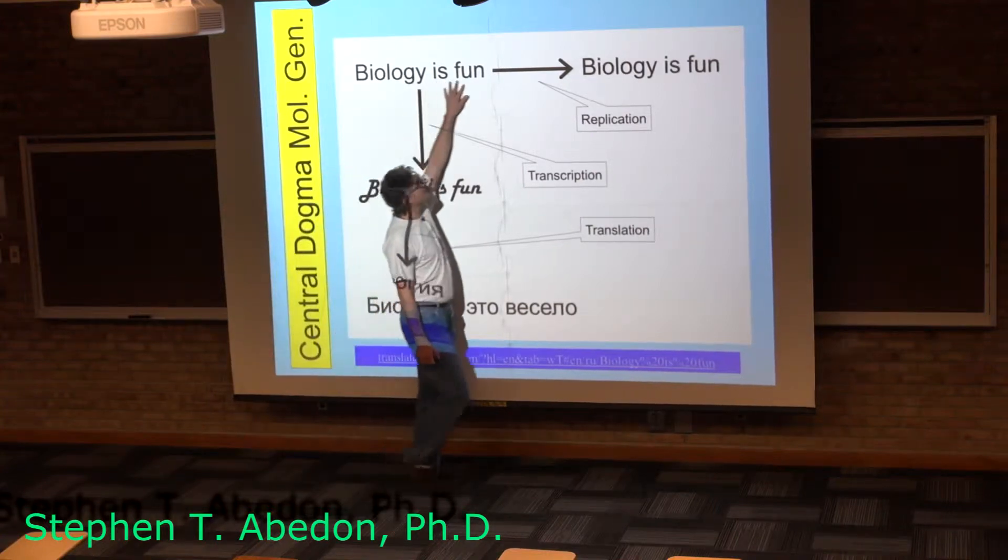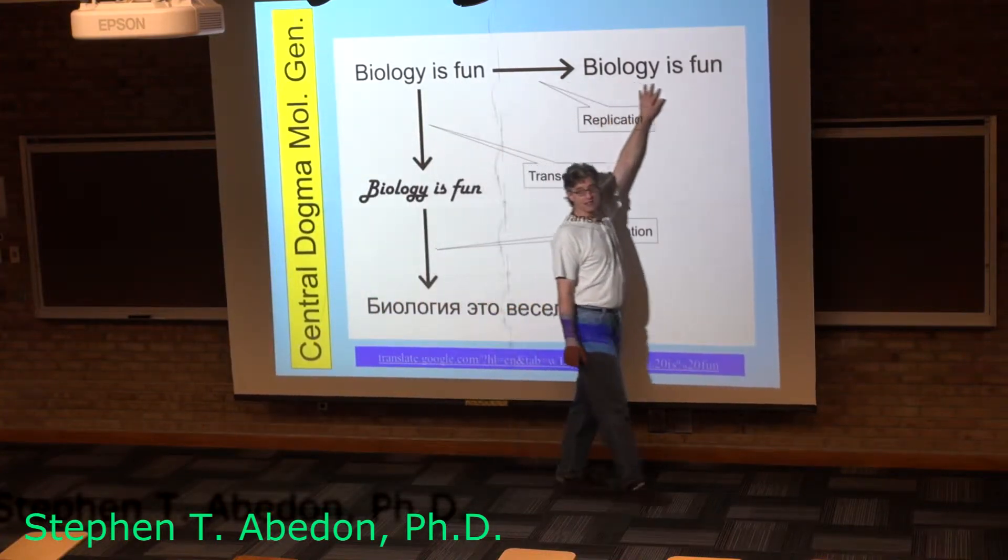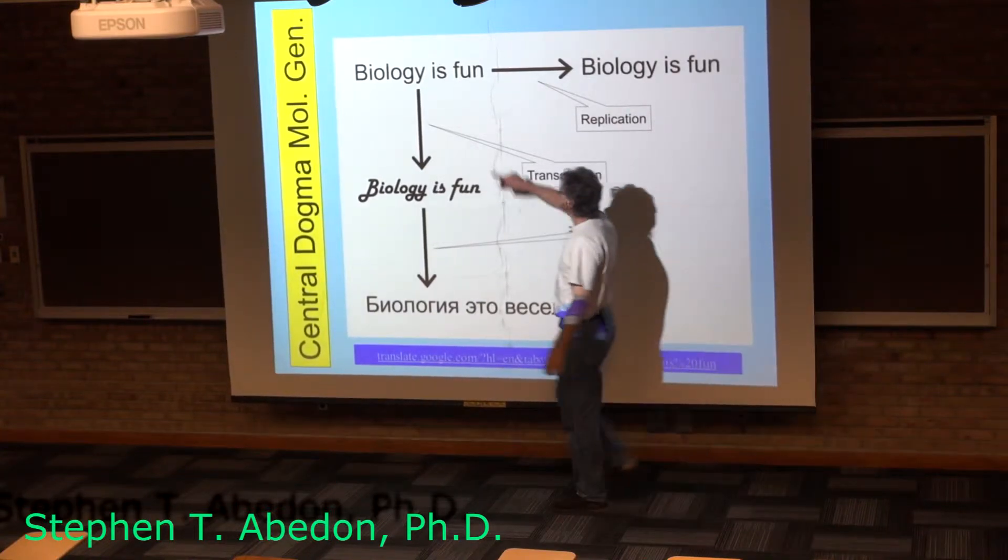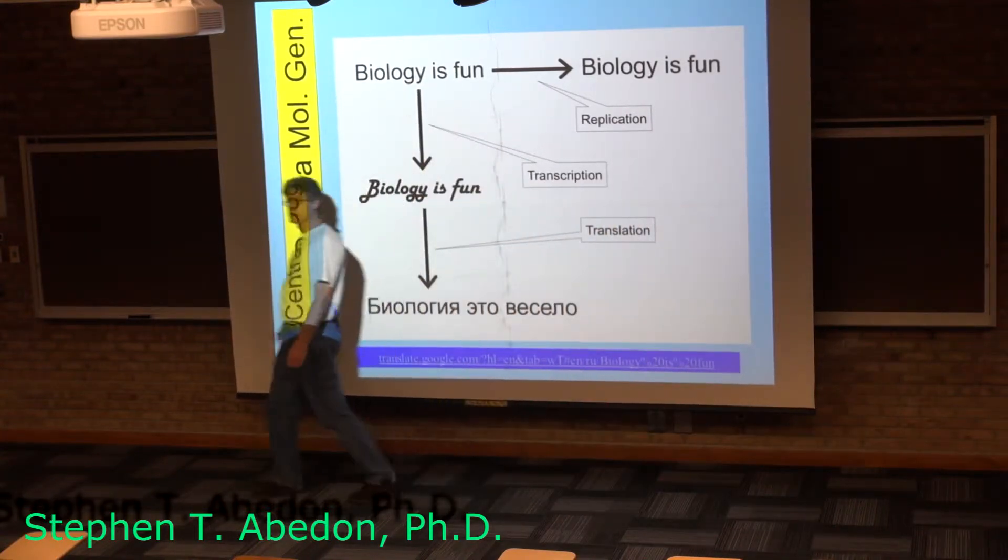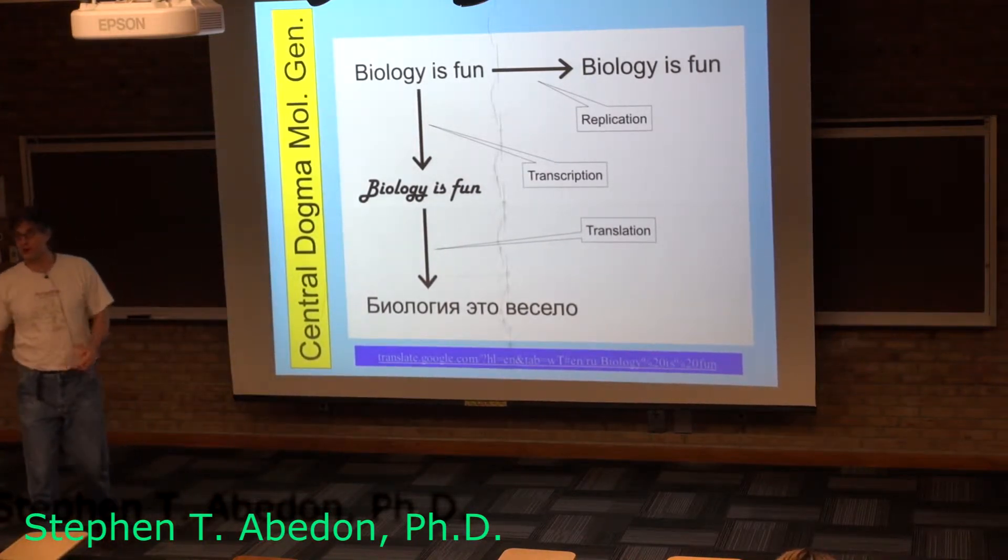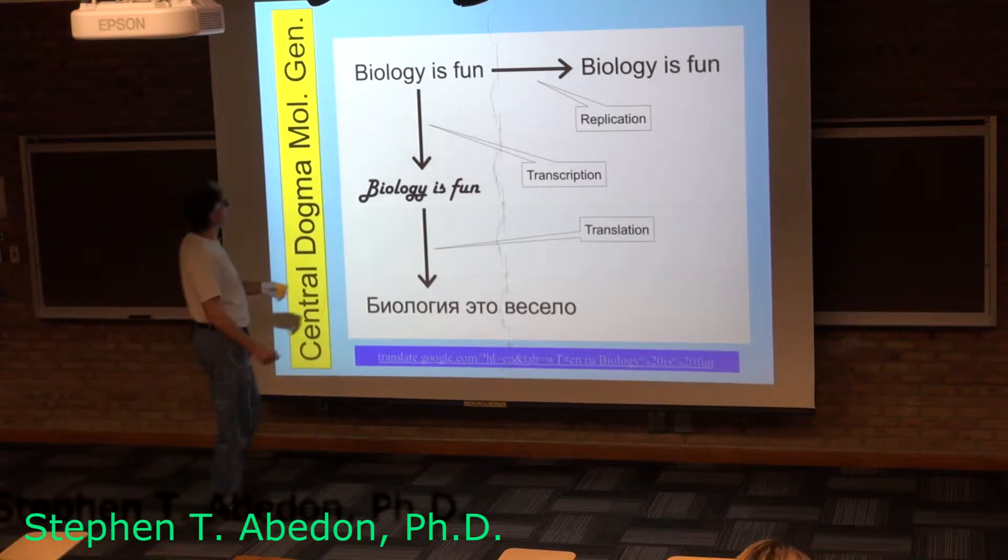Replication is basically taking a double helix and copying that double helix. Transcription is taking the double helix and converting it into a different molecular chemical form, going from DNA to RNA.